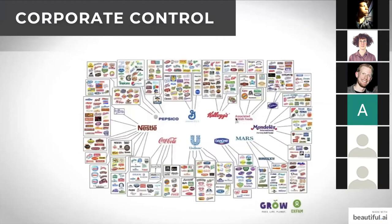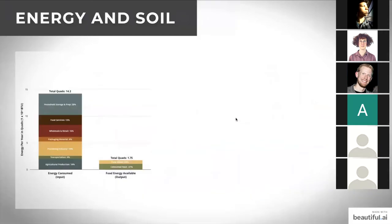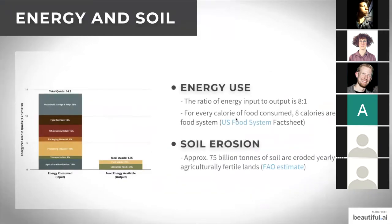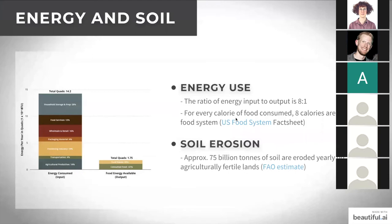Corporate control of food is a major issue. In the US, despite many packaged food brands, only about 10 parent companies own most food and beverage companies, creating significant monopoly power that influences dietary behaviors in unhealthy directions. On the resource side, approximately 75 billion tons of soil are eroded yearly on agricultural lands. The energy input-to-output ratio for US food is 8 to 1 — for every calorie consumed, about eight calories of energy are used in production, with processing, production, and household storage being the biggest consumers.